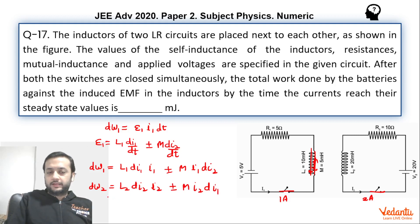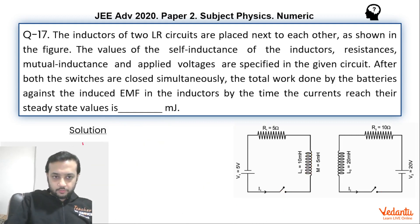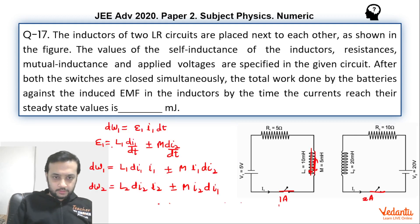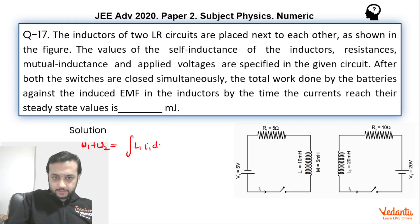If you add these two and integrate, W1 plus W2 will be equals to integral of L1·I1·dI1 plus integral of L2·I2·dI2 plus M, we can take outside, so plus minus M times integral of I1·dI2 plus I2·dI1.